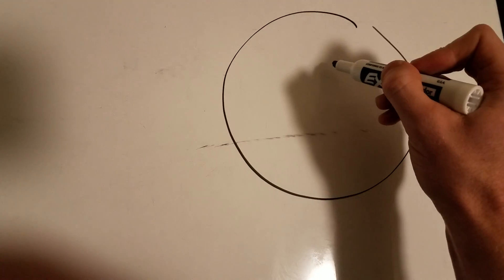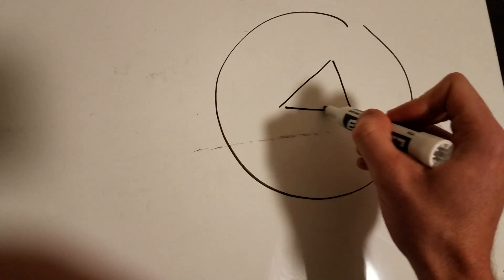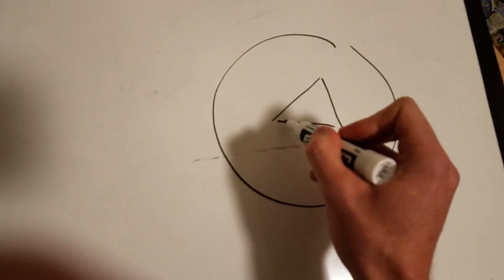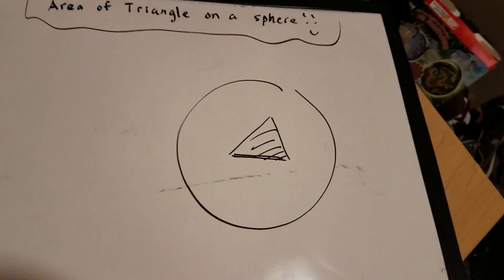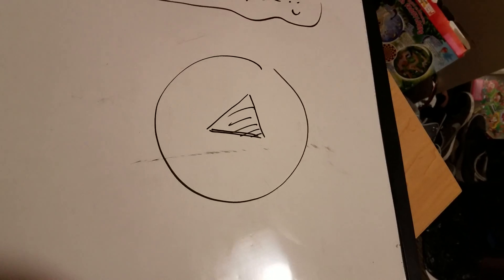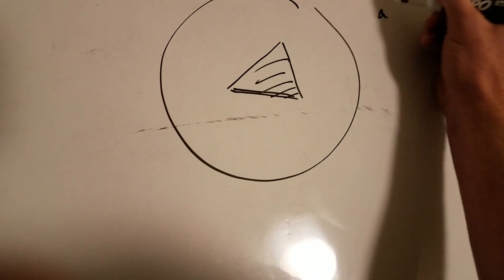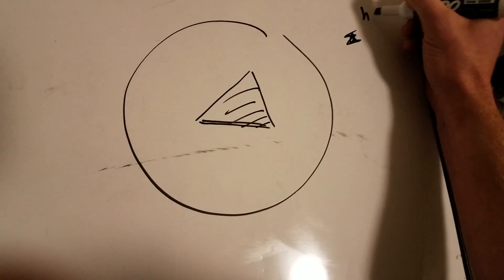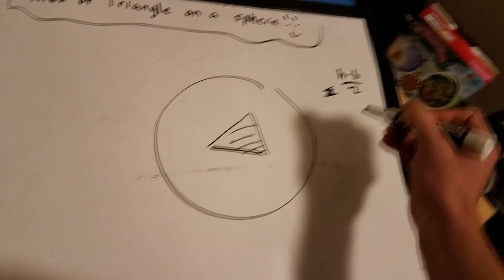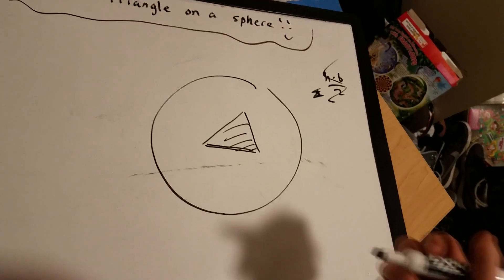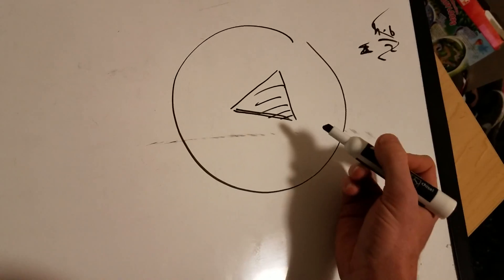You've got this triangle here and you're thinking: I want to find the area. On a plane it's easy enough — you just do height times base over two. But on a sphere? Nope, it's not that simple. You've got to do some weird stuff.